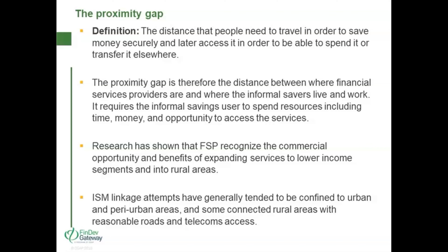Linkage efforts from FSPs are often impacted by the lack of clarity to extend services into less densely populated areas, resulting from insufficient information about the distribution and characteristics of potential rural customers. FSPs tend not to go beyond their comfort zones. Throughout this webinar we will look at practical ways to address the proximity issue and help FSPs identify exactly what the population in an area looks like and how to serve them better.